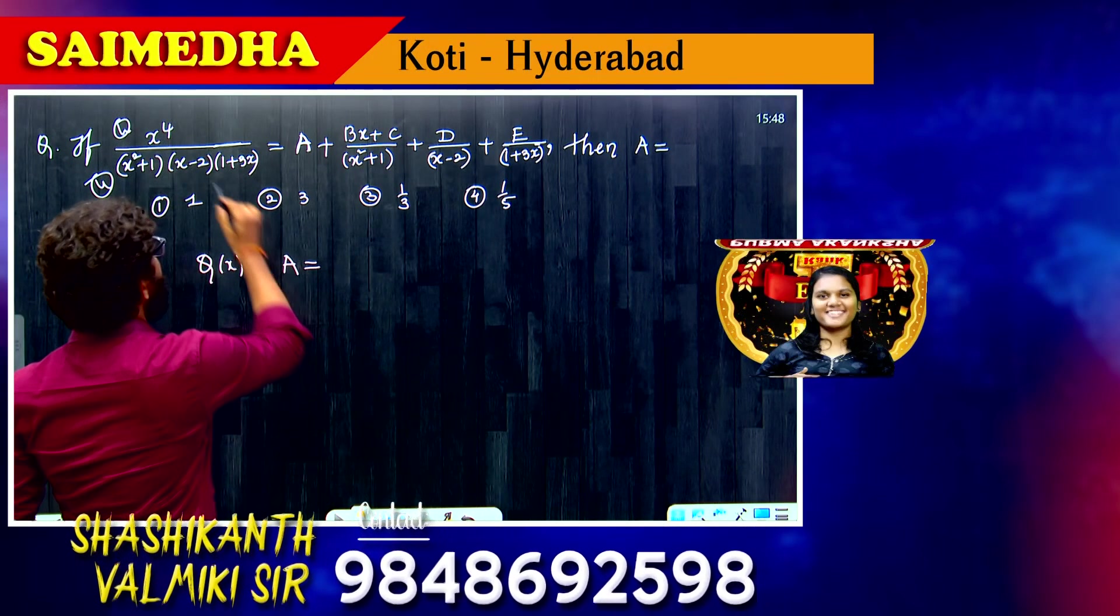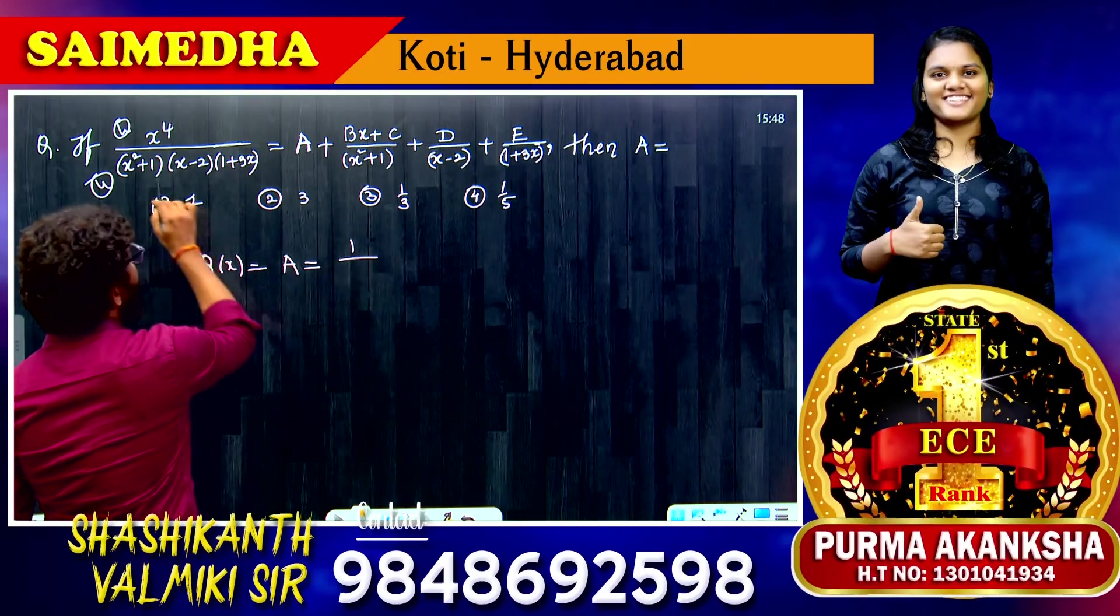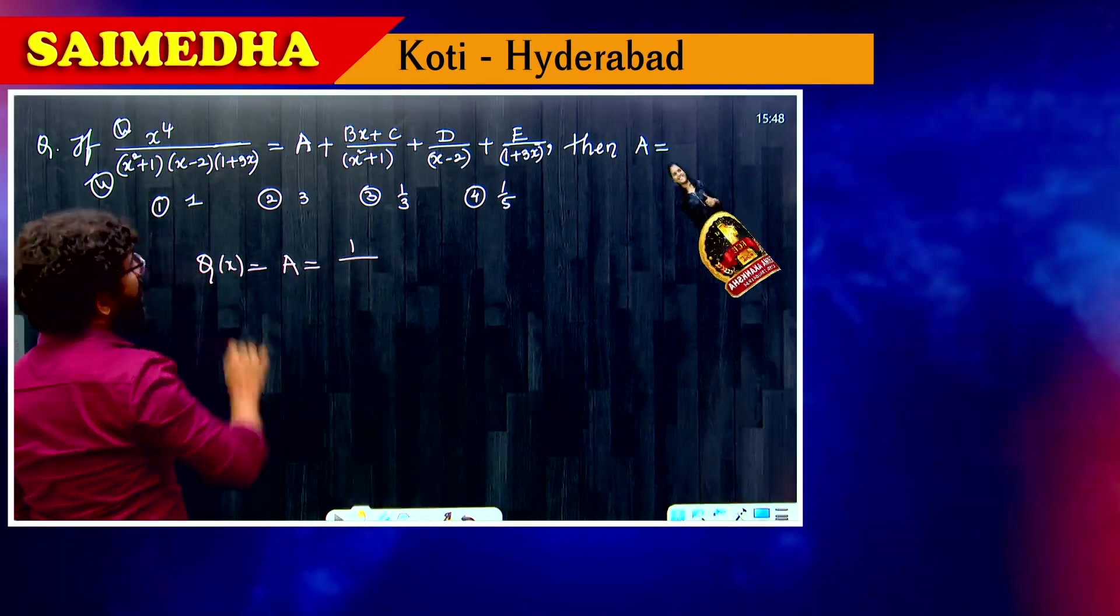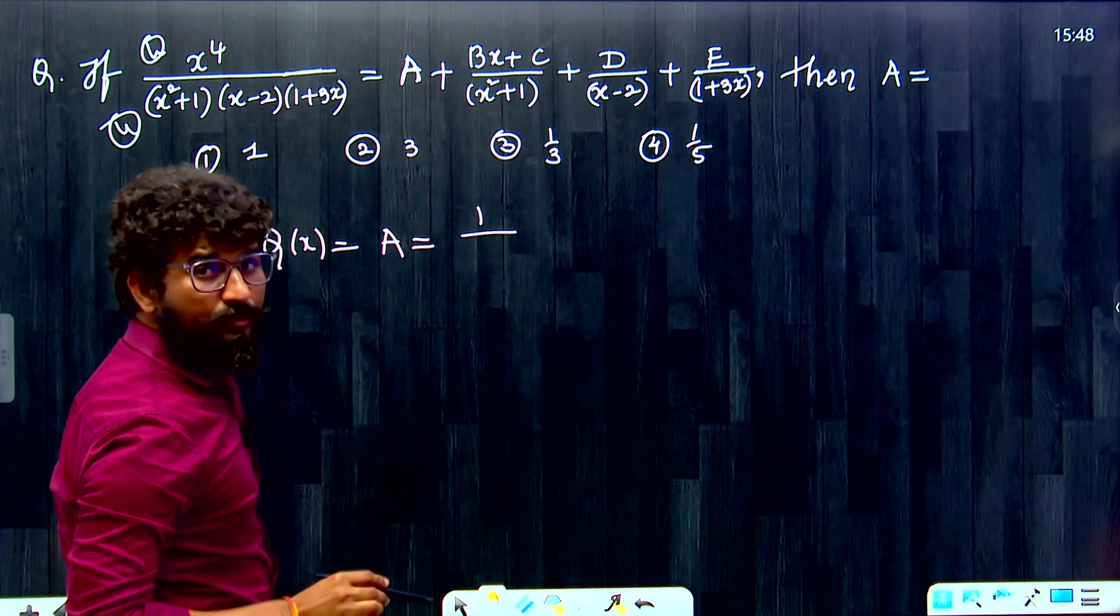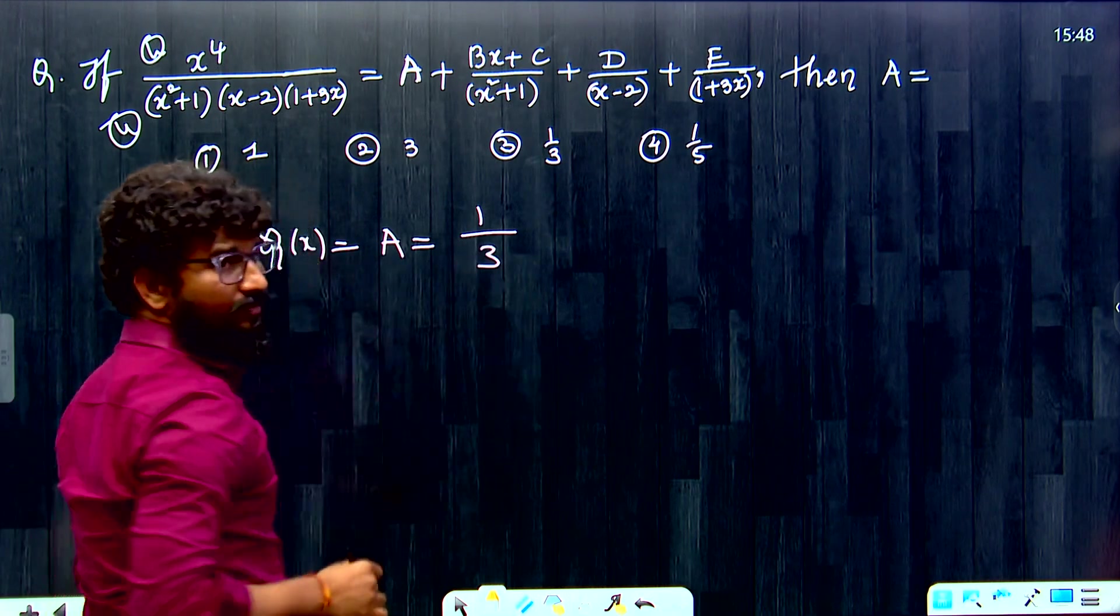One formula: the coefficient of highest degree term in numerator is 1. Denominator has X square into X, X cube. X cube into 3 X square, 3 X to the power of 4. And A is 1 by 3.